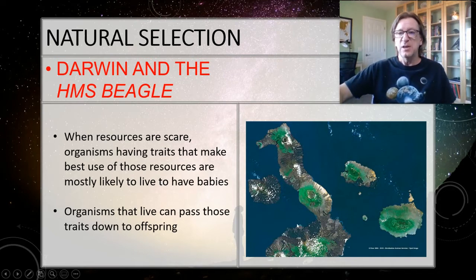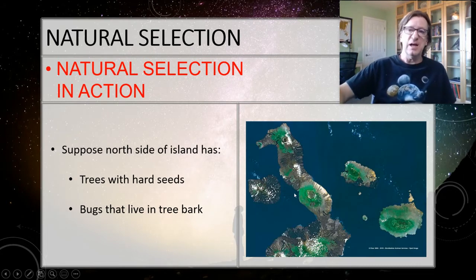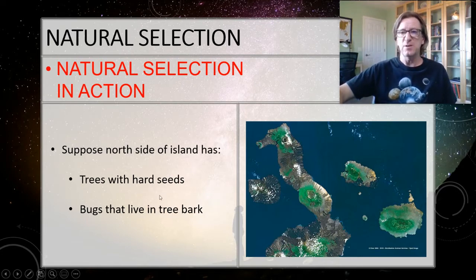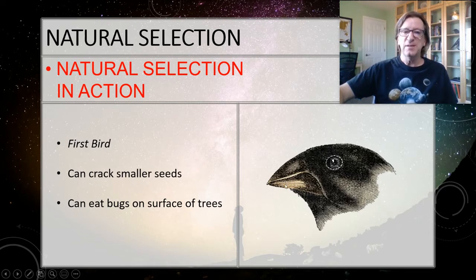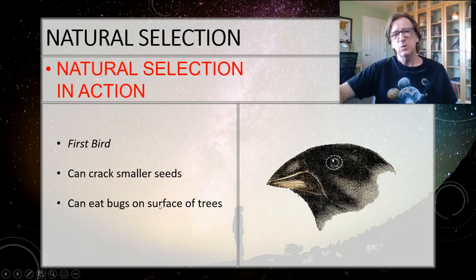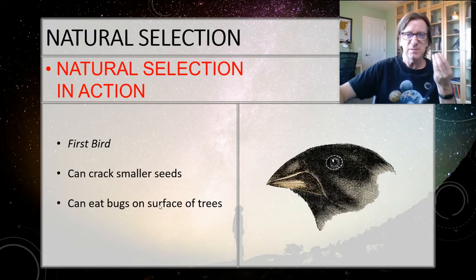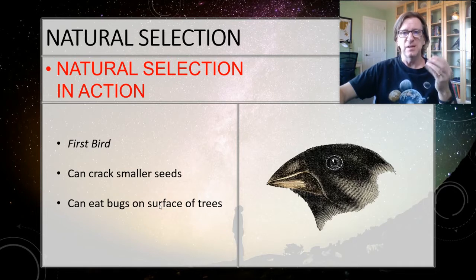Here's a picture of the Galapagos Islands. In the lab, you're going to do a quick tour of the Galapagos Islands, and we'll talk about that in a bit. Let's look at a hypothetical situation — follow along with your class notes. Suppose the north side of this island has trees with very hard seeds and bugs that live in the tree bark. The seeds require a really strong beak, and the bugs live in the bark, so you have to dig to get them. Originally there was just one type of bird on the north side — we'll call it First Bird. With its beak it can crack smaller seeds but not the tougher ones, and it can eat bugs on the surface of the trees. So it has two sources of food and is doing basically okay.